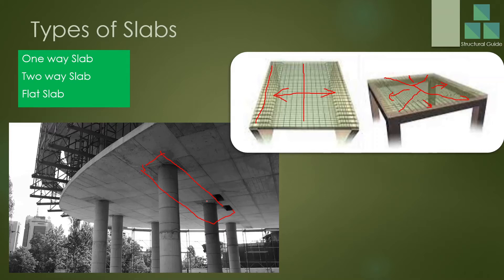Flat slabs are very useful for services and building systems because with no beams obstructing the ceiling, services can run smoothly and floor-to-floor height can be reduced. However, construction cost may be slightly higher than a beam-slab combination, and flat slabs may require greater thickness in some cases.